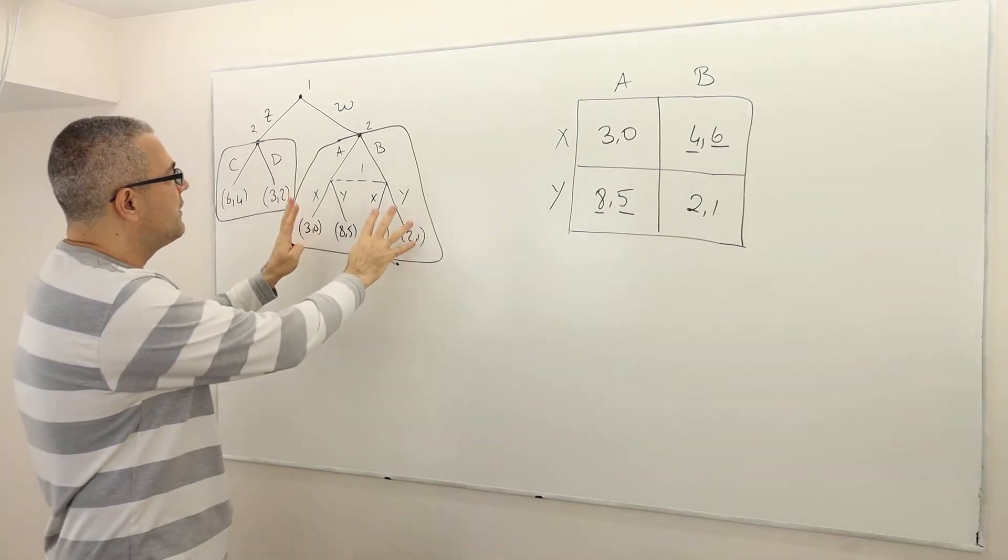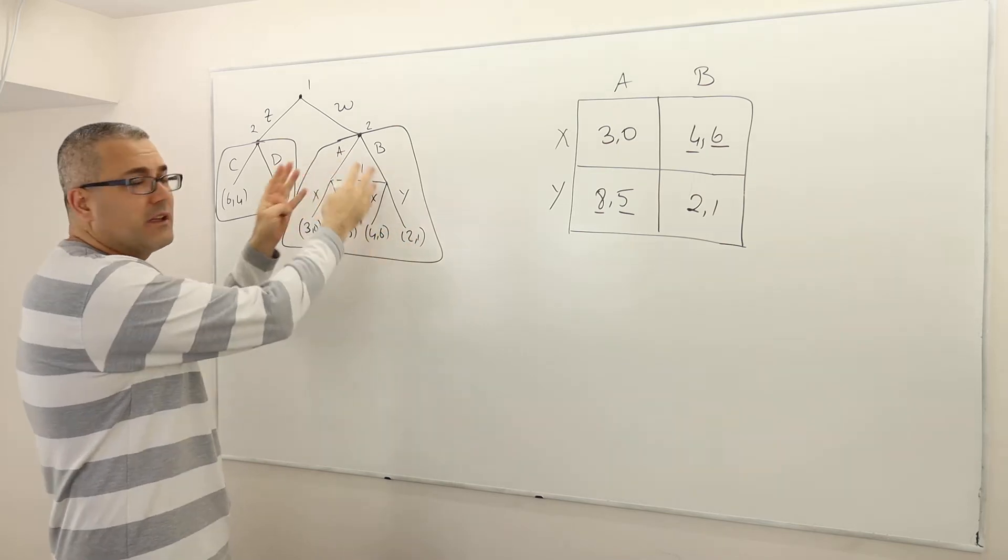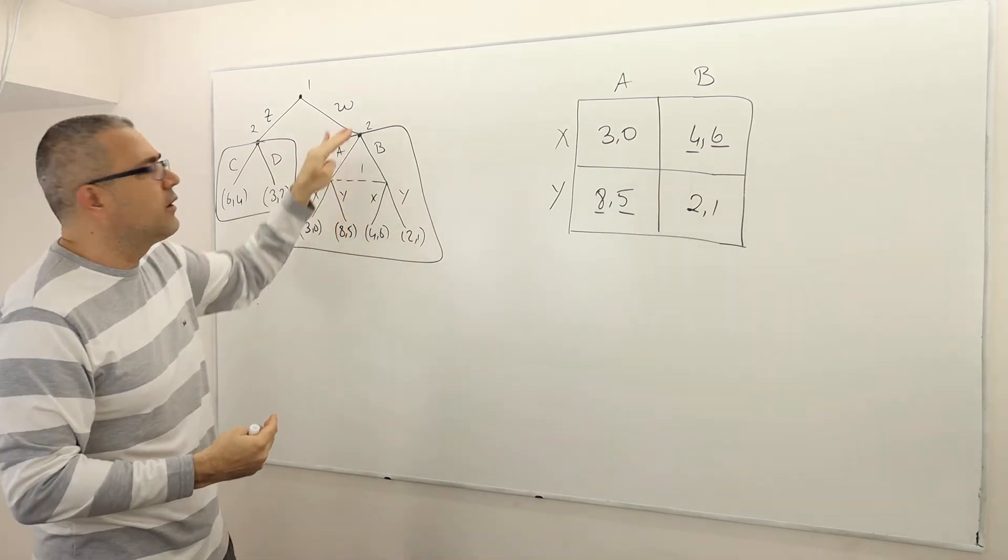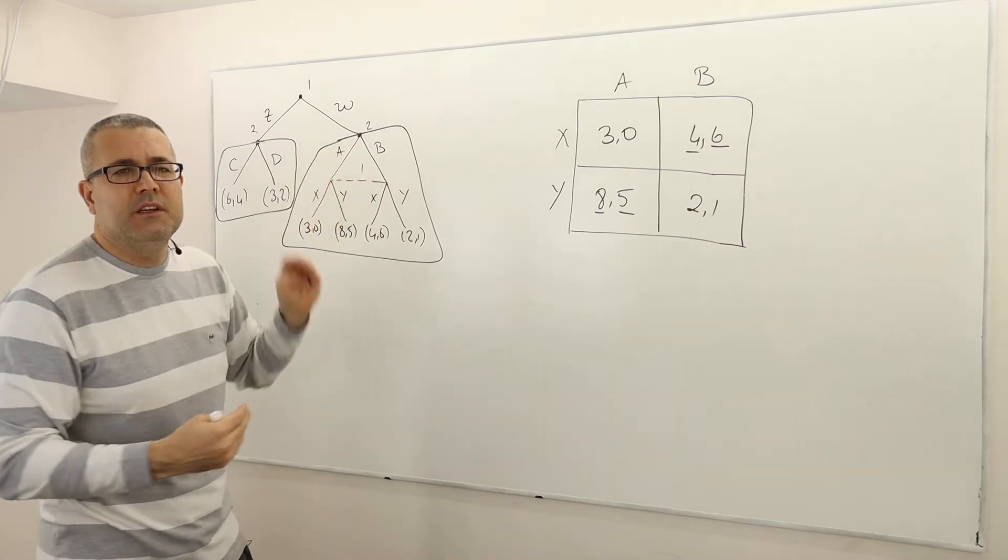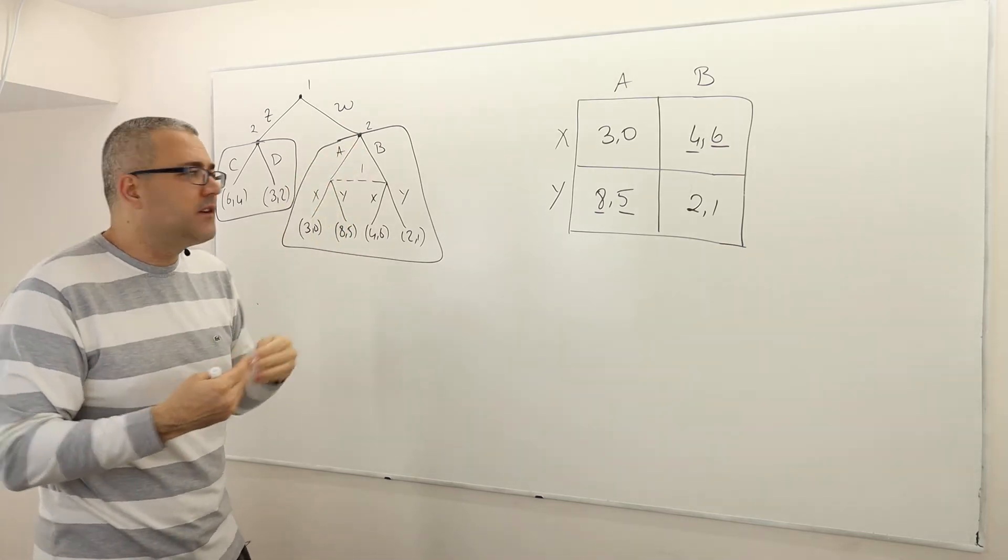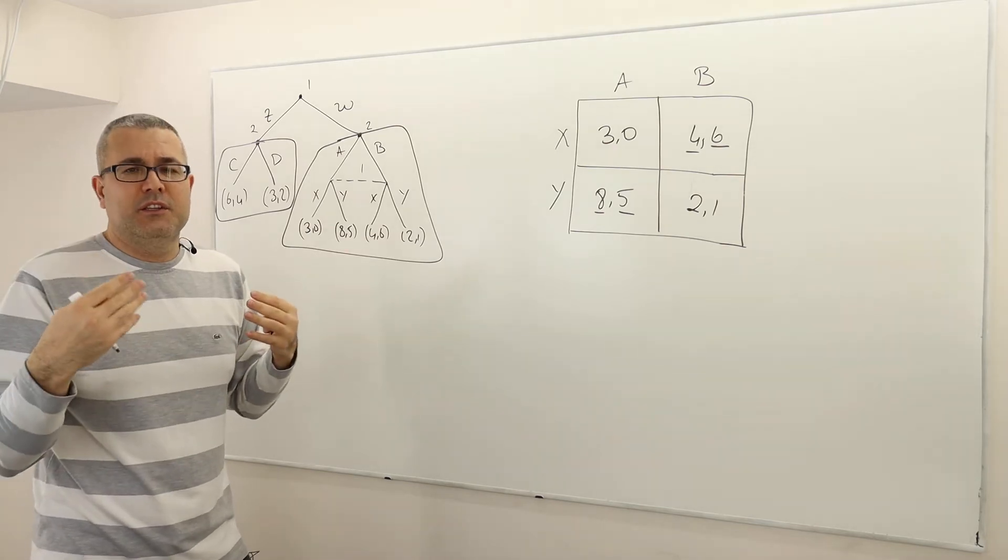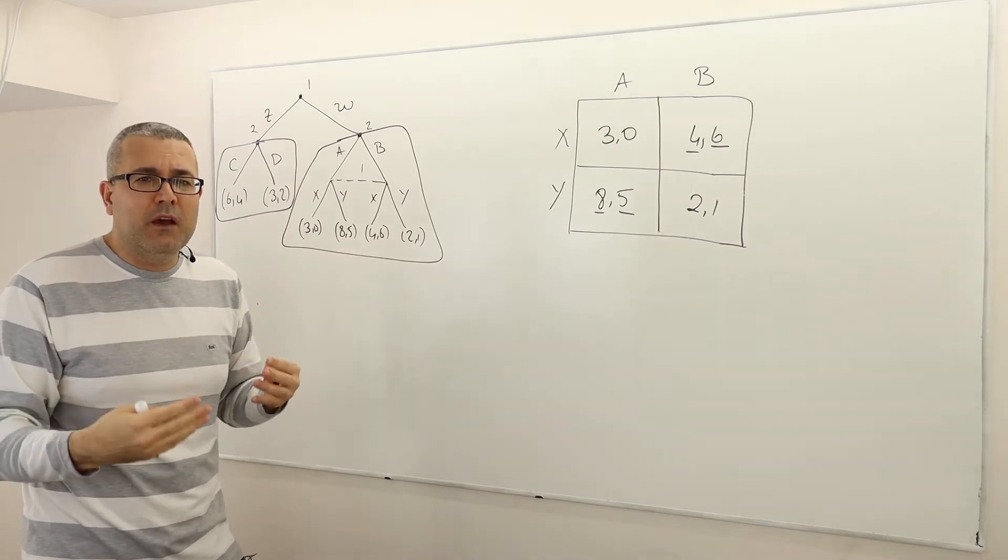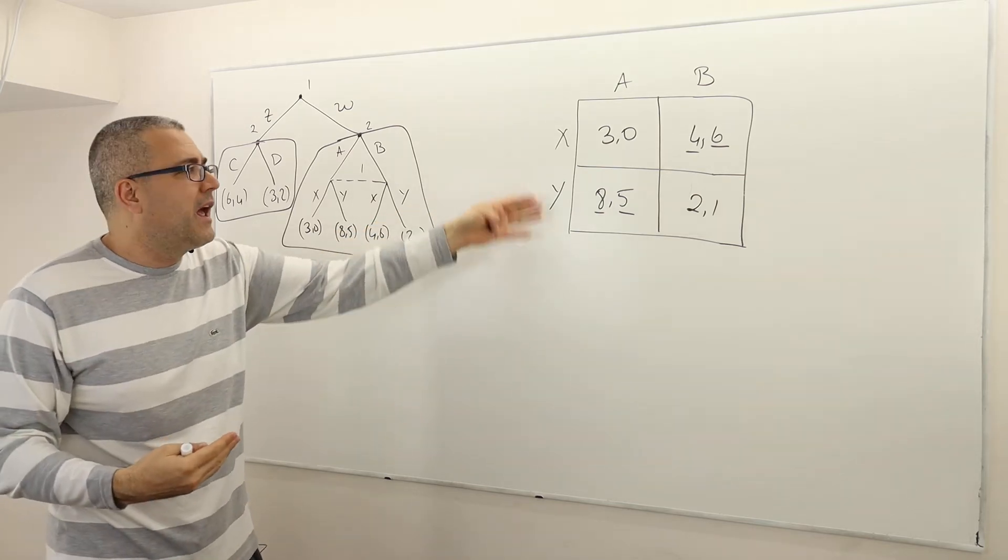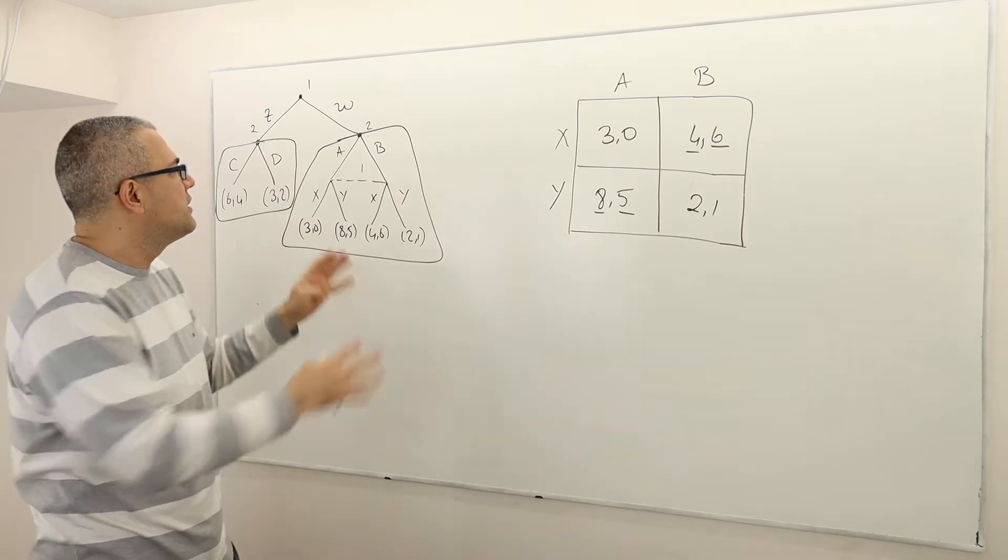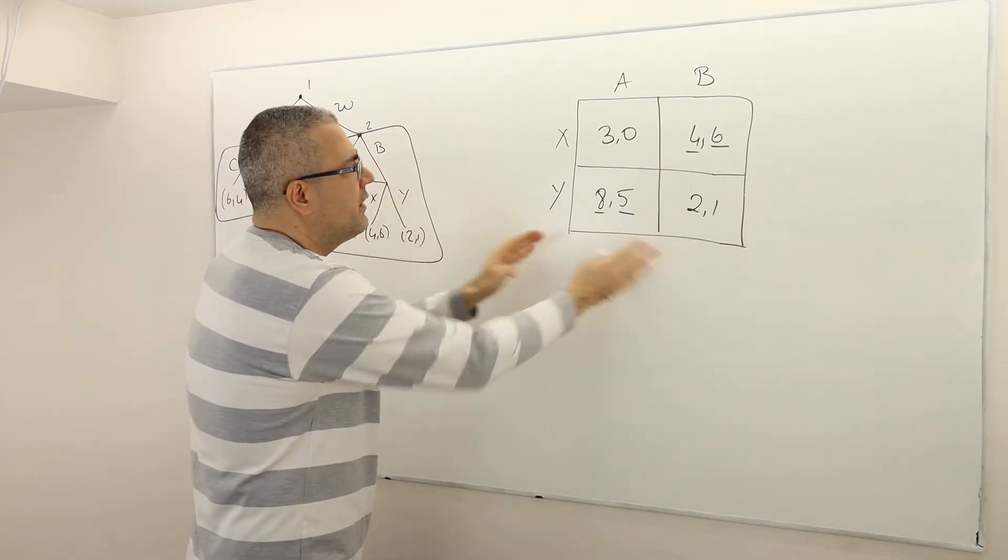So how do we do that? So this game can actually, well this is a simultaneous move game, right? Meaning player 1 cannot observe player 2's move, whether it's A or B. So that means I cannot use backward induction, so the optimal actions or optimal strategies can be found only by writing the normal form and finding the Nash equilibrium. So here I have to find the Nash. So this game is equal onto this.